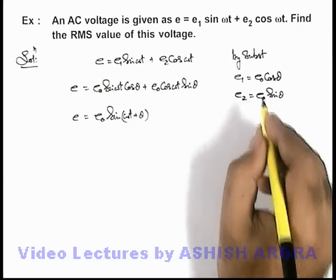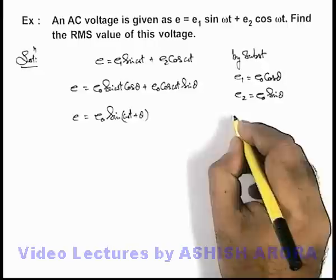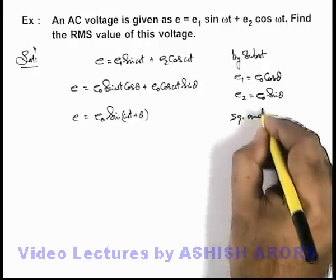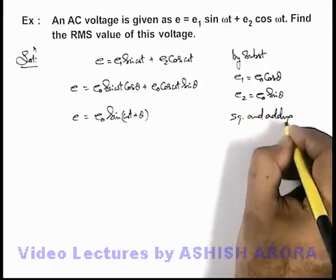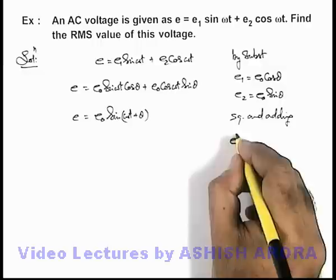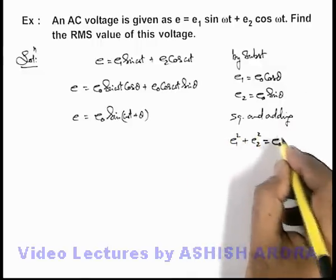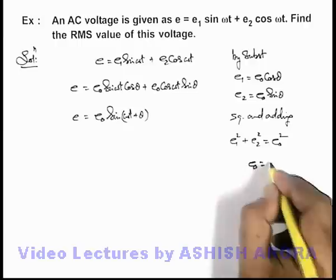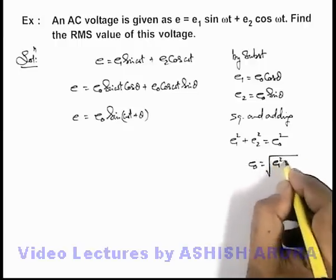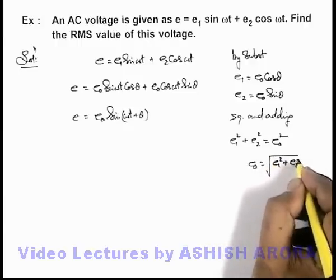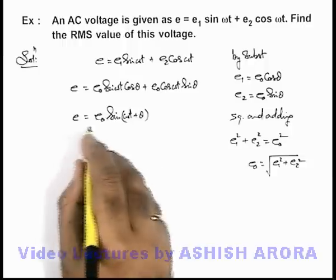Here the value of emf e₀ we can calculate by squaring and adding these functions. We can see we'll get e₁ square plus e₂ square is equal to, on the right hand side, it'll be e₀ square, or e₀ we can write as root of e₁ square plus e₂ square.